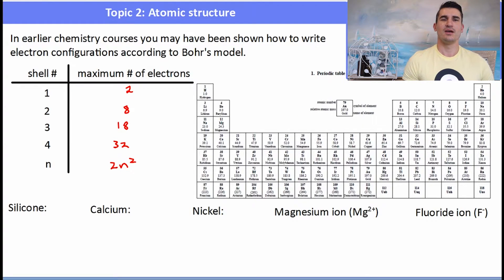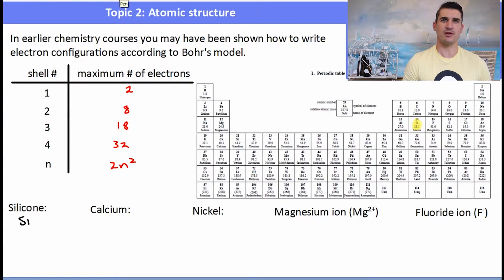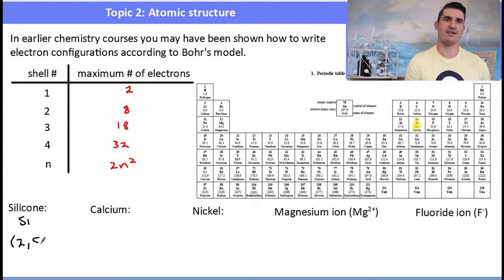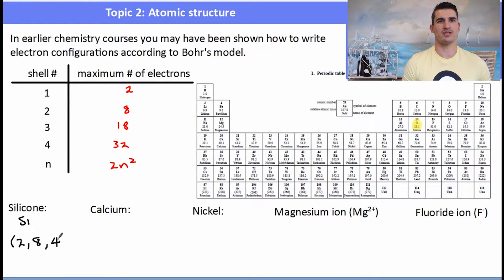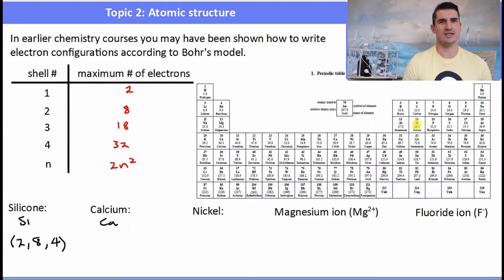Silicon is directly below carbon and has 14 electrons. We can look at the periods to work out the number of electrons: two electrons in the first shell, which is the full first period, eight electrons in the second period filling that shell, and then we move to the third shell.